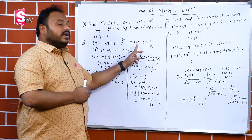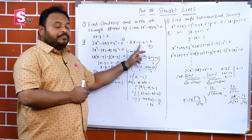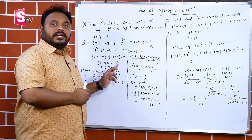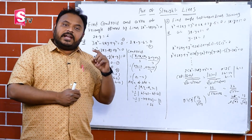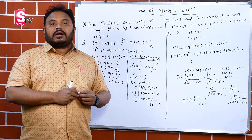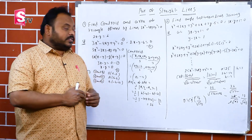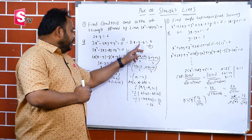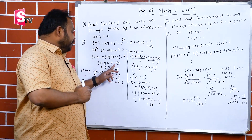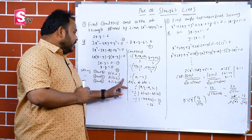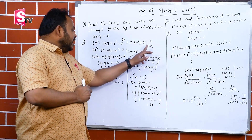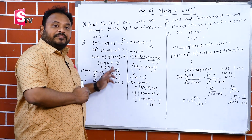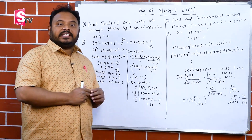These gave us two lines from the combined equation, along with the given third line. Since the two lines from the combined equation pass through the origin (no constant term), one vertex is (0, 0). Solving the remaining pairs of lines gave vertices (6, 6) and (−6, −18).